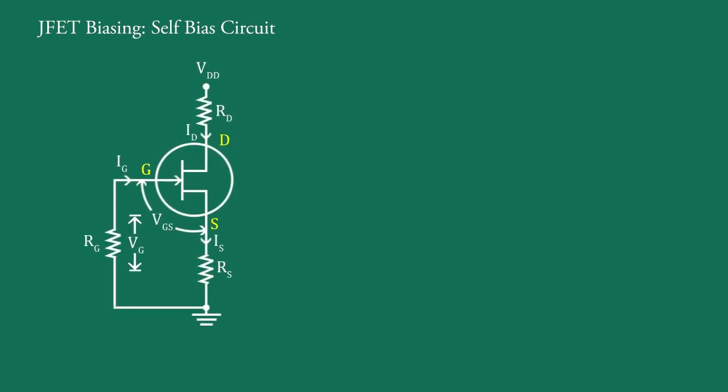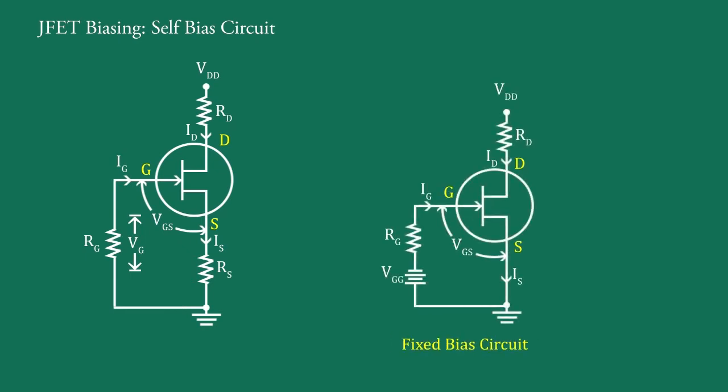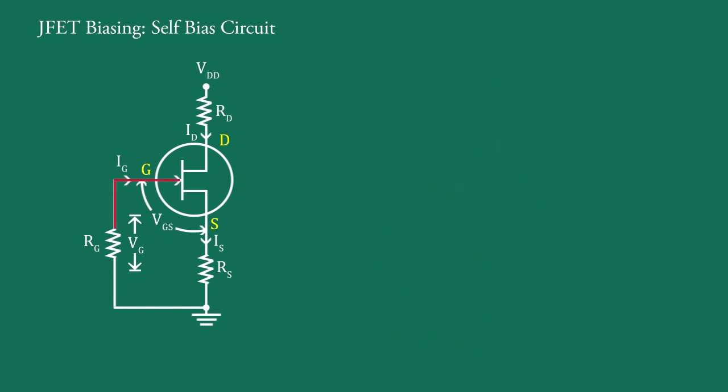A self-bias configuration of JFET is like this. As compared with fixed bias circuit for JFET, here one resistance RS is inserted between source terminal and ground, and battery VDD is removed.